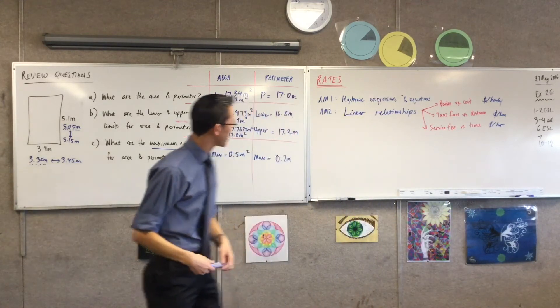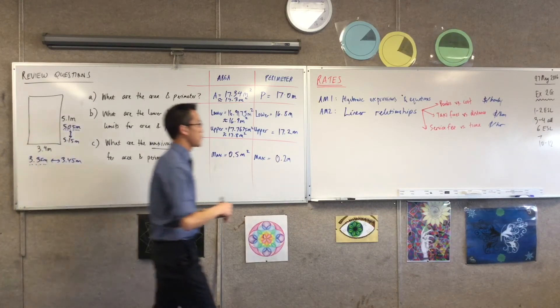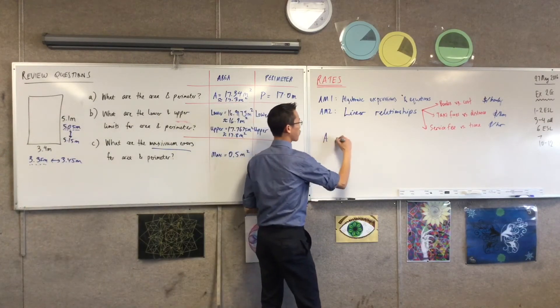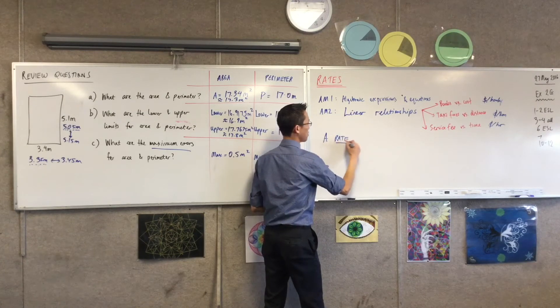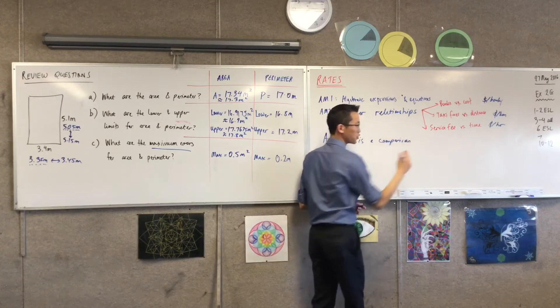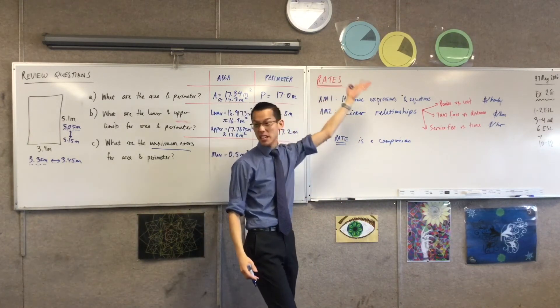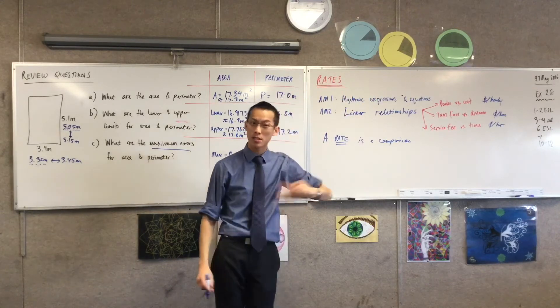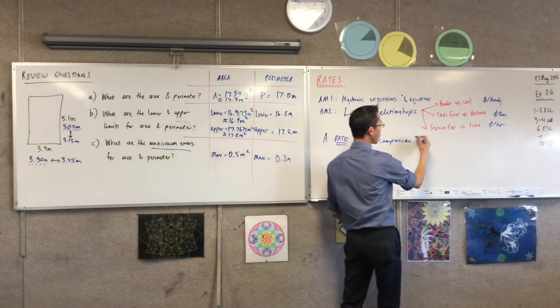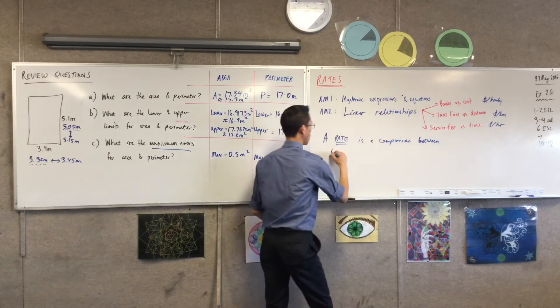So you're always comparing these two things and you get a rate out the other side. So I might say dollar, actually all of these are money. Dollar per book, sorry. Dollar per kilometer, dollar per hour. Okay. So we have this language of rates. This is kind of, we're very, very familiar with. But all it means is, maybe I want to put this in a box. A rate is a comparison between two quantities that change, right?